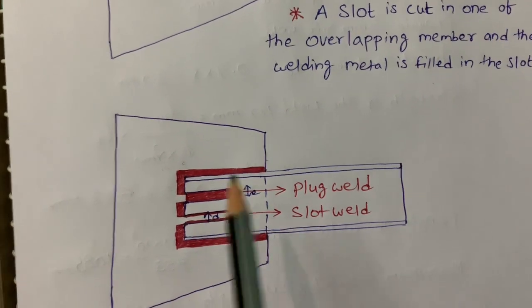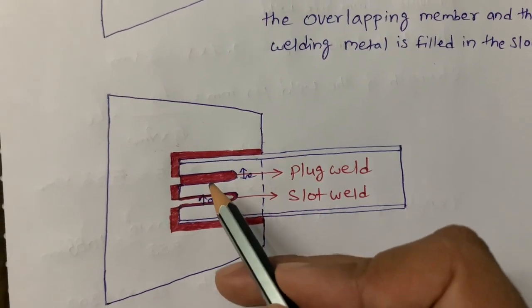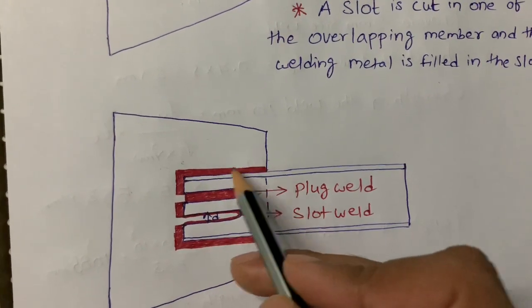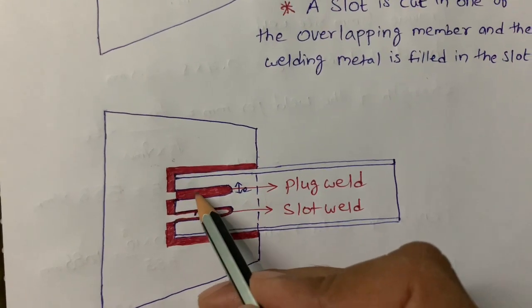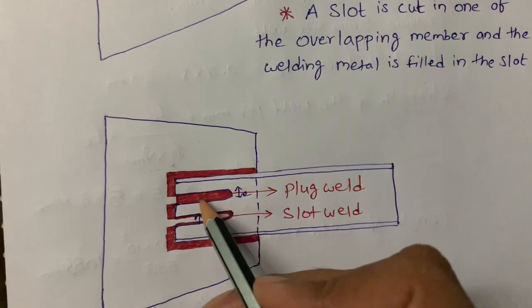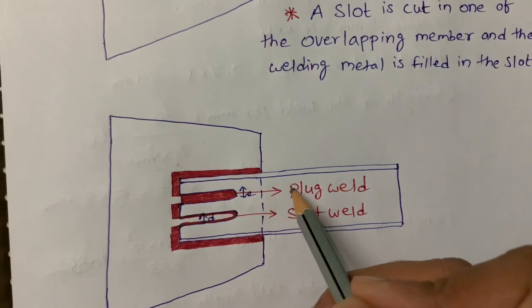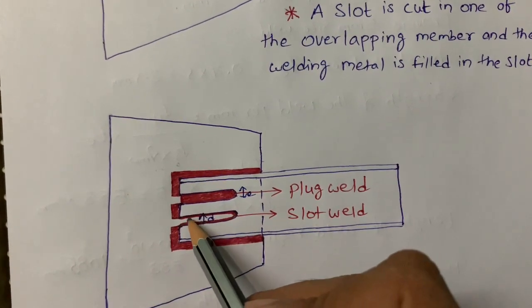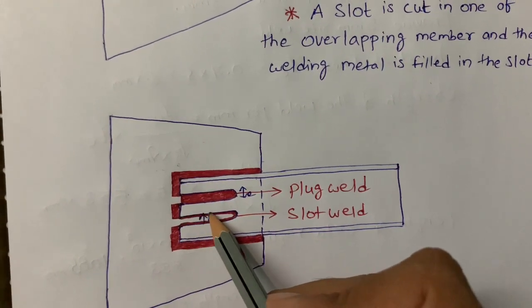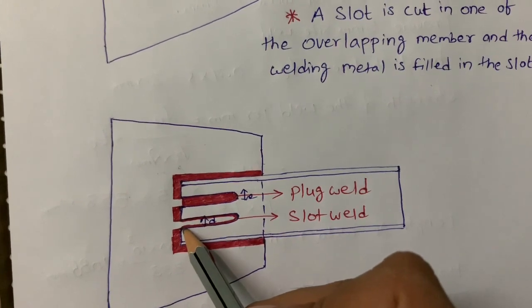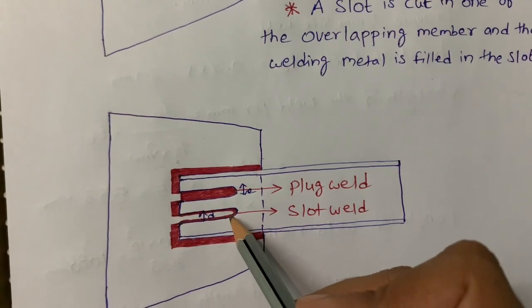Slot weld and plug weld are both different. If we cut the overlapping member and fill it totally with weld, that is called plug weld. But if we cut the same plate like this and fill weld only at the outer edge, that is called slot weld.